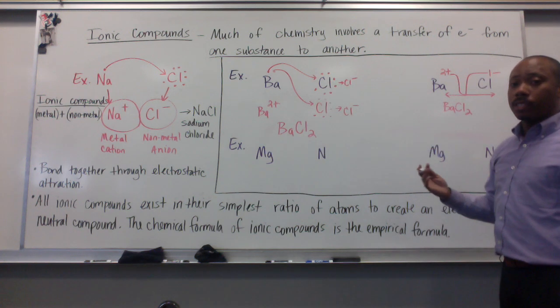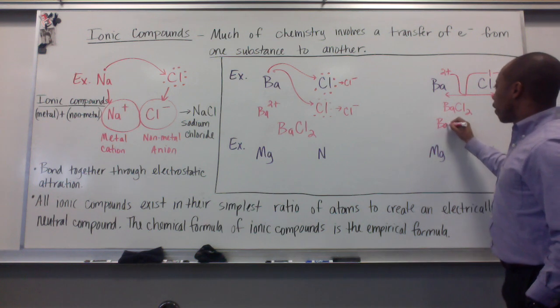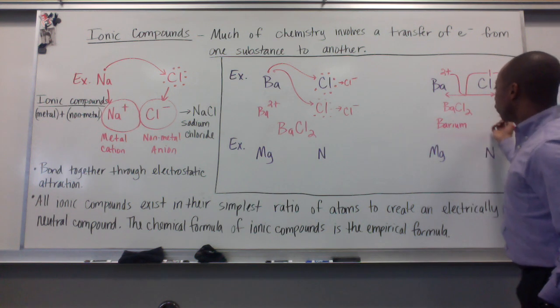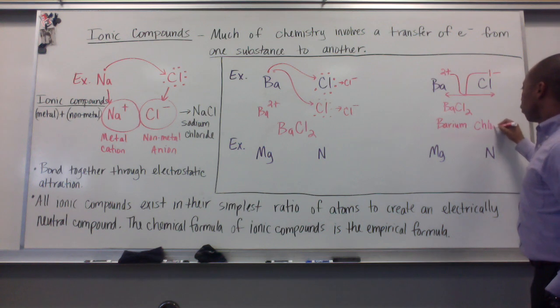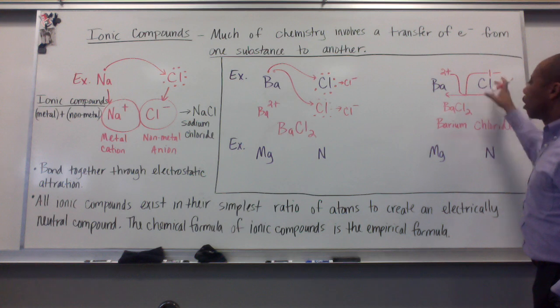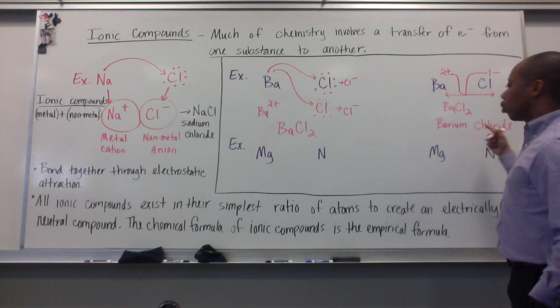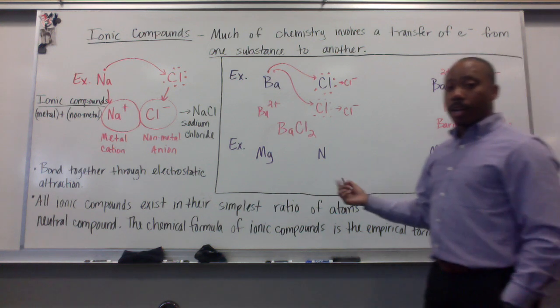When naming this, we simply take the cation name and the anion name and we put them together. So we have barium chloride. This would be a barium ion or a chloride ion, but they're not ions anymore once they've joined together because it's electrically neutral. So we just call it barium chloride. Same can be done here.